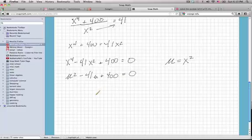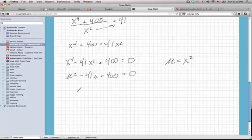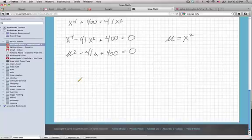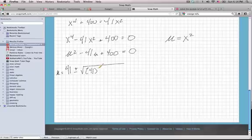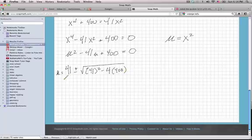Now if you can factor this, good for you. If you can't, that's okay. Let's fall back on the quadratic formula to solve this. So I have negative b plus or minus the square root of b squared minus 4 times a times c all over 2 times a.